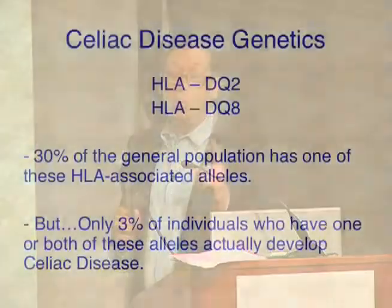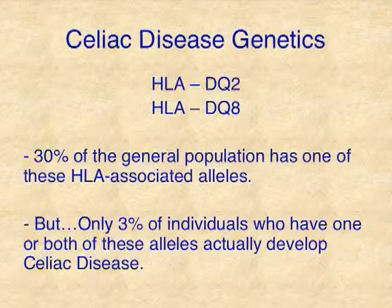If we look at celiac disease, the two genes that seem to be associated with it are the human lymphocyte antigens — the alleles are DQ2 and DQ8. Look at these statistics because they're very important. Thirty percent of the general population has one of these HLA-associated alleles. But only three percent of individuals with one or both of these alleles will actually express celiac disease. The presence of the alleles is not diagnostic. The overwhelming majority of people who have this genetic predisposition do not develop celiac disease.